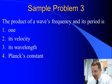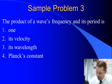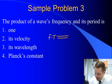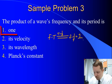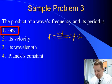One more. The product of a wave's frequency and its period is what? Well, frequency times period equals, well, if period is 1 over frequency, we could write this as frequency times 1 over frequency, which is equal to 1. So a wave's frequency times its period must always be 1.